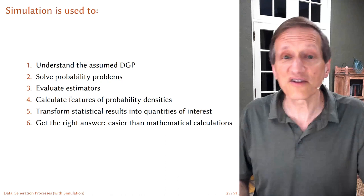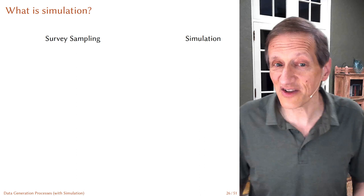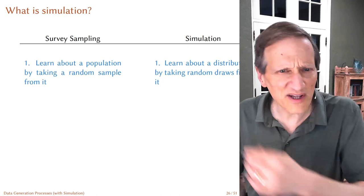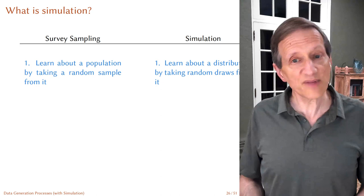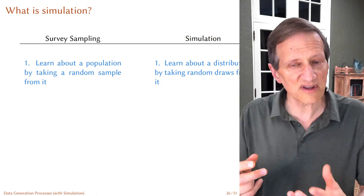Let me give you a feel for what simulation is by comparing it to survey sampling — they're actually very similar parallels. In survey sampling, we learn about a population by taking a random sample and analyzing it to infer back to the population. In simulation, we learn about a probability distribution by taking random draws from the distribution and inferring back to it. It's often relatively easy to take random draws from a distribution even when it's very difficult to calculate certain quantities from it directly.